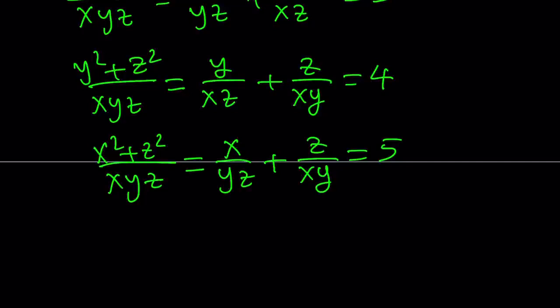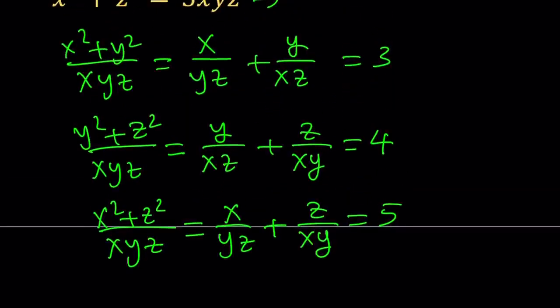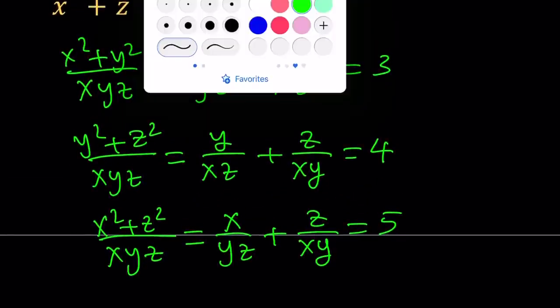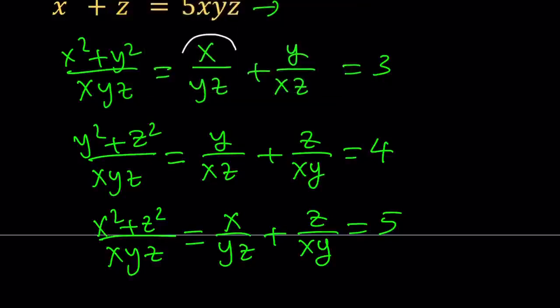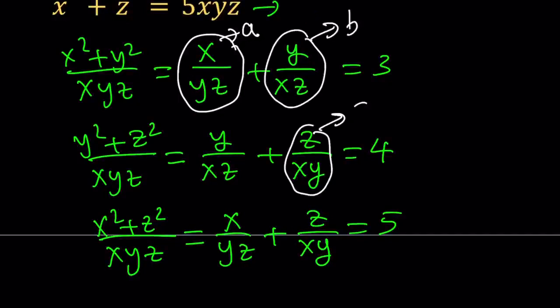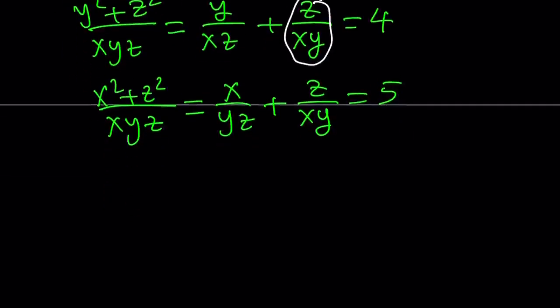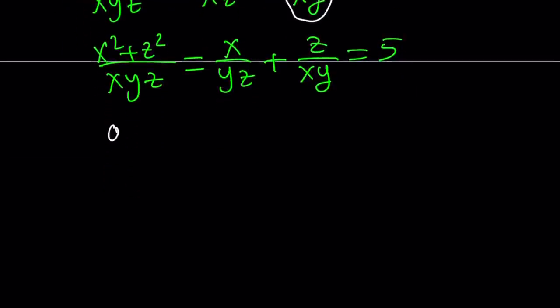Now, to solve this as a system, I'm going to use substitution. And I want to name these something to make it a little easier on ourselves. So let's go ahead and call this A. Let's call this B. And let's call this C. And from here, we get a really nice system, which is A plus B is equal to 3, B plus C is equal to 4, and A plus C is equal to 5.